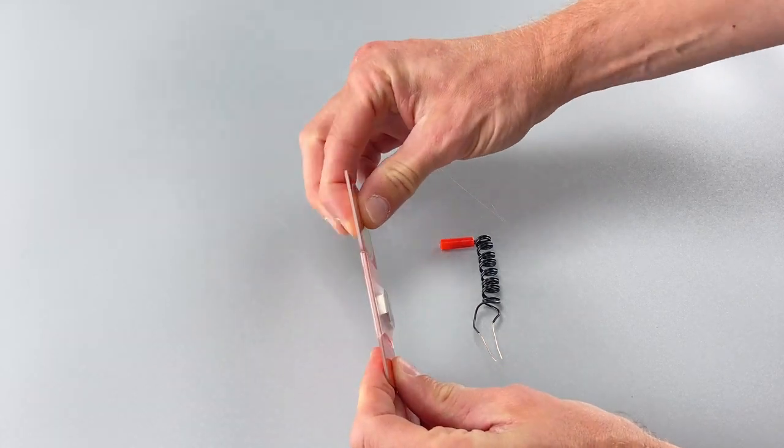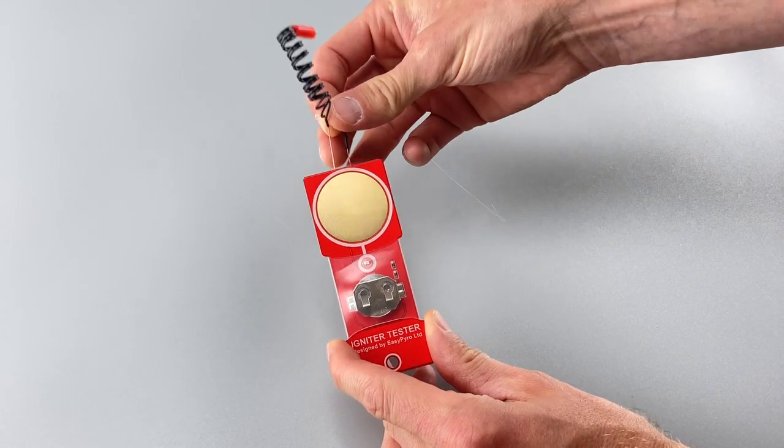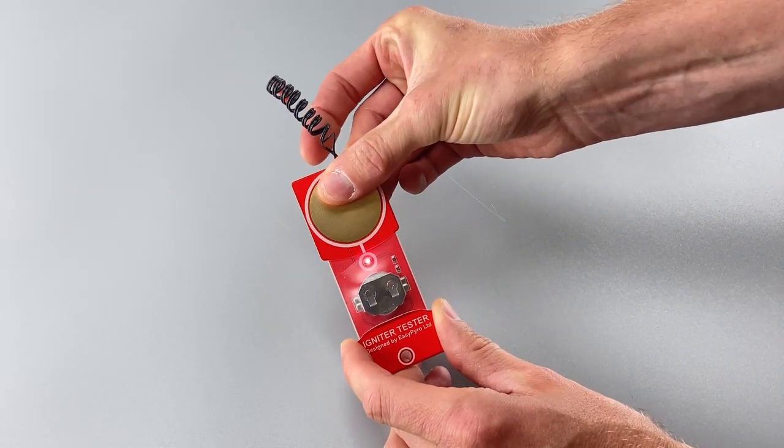The idea here is that you touch your igniter wires to the gold pads on the back and front of the unit, and it sends a small current through there so you can easily see if you've got good continuity.